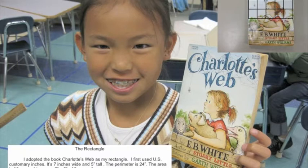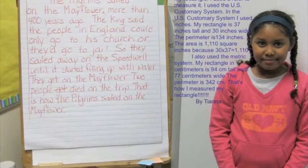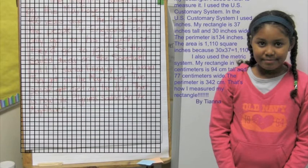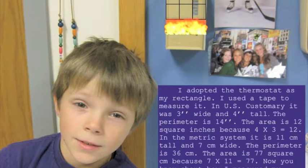Each child in the classroom adopted a rectangle, and they measured it to find the area and the perimeter. They wrote about their measurements on Google Docs, and when they made their slideshow, they were able to import their text. They also created tables, which gave them a chance to see the area of their rectangle. They had a lot of fun finding that rows or columns could come in one at a time, and it gave them a real understanding of the difference between rows and columns.